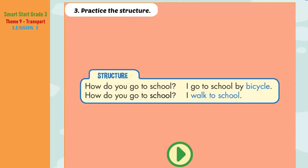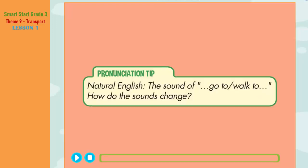B. Three. Practice the structure. How do you go to school? I go to school by bicycle. How do you go to school? I walk to school. Pronunciation Tip: In natural English, 'go to' sounds like 'go to', 'walk to' sounds like 'walk to'.